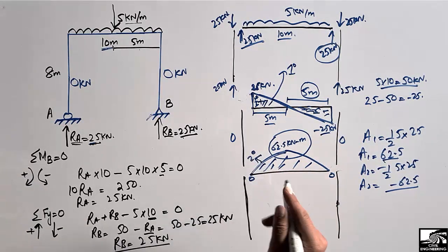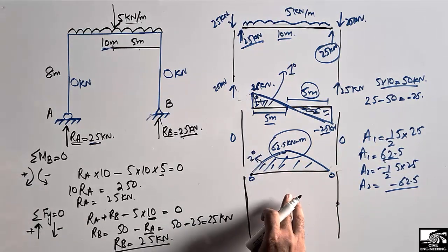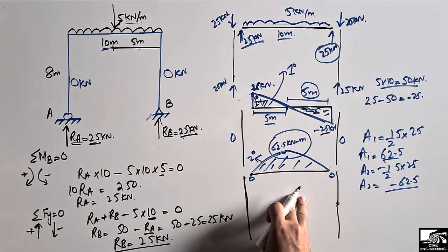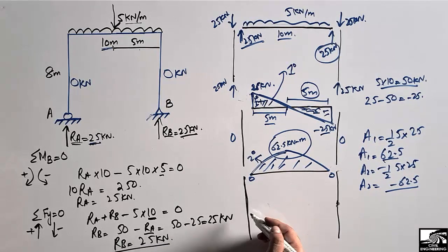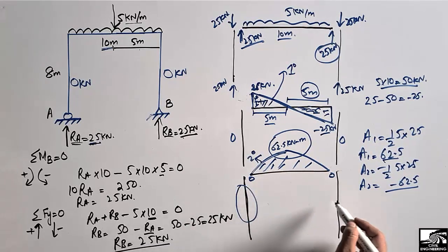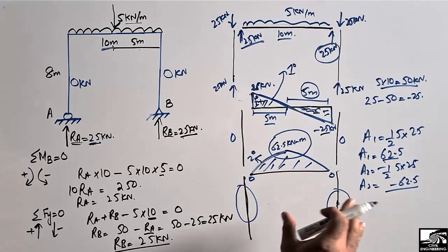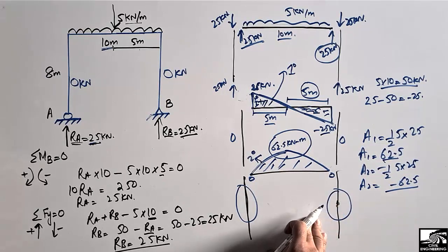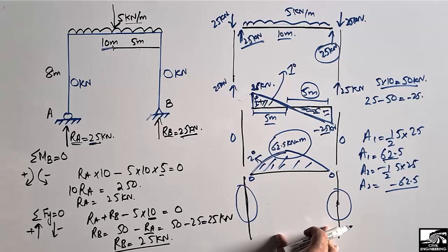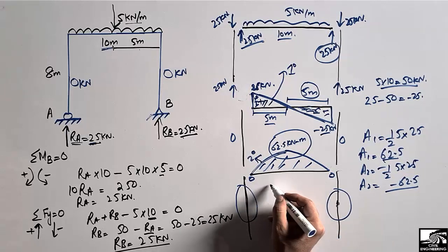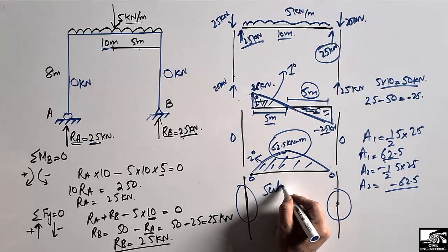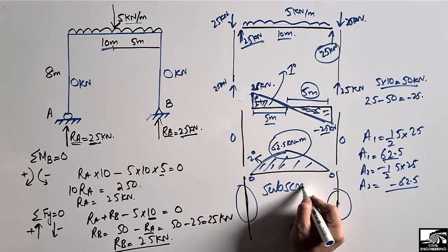The bending moment diagram for both columns is zero because there is no lateral or transverse force acting on them. Hope you guys understand. Don't forget to subscribe our channel for more engineering videos.